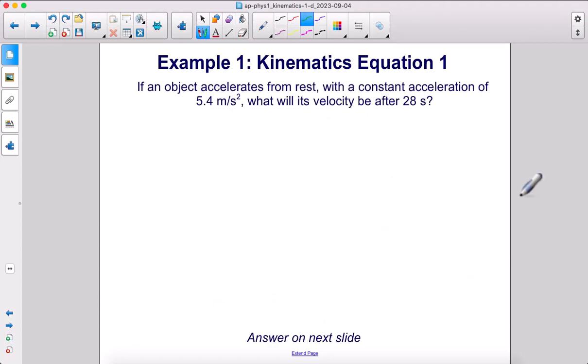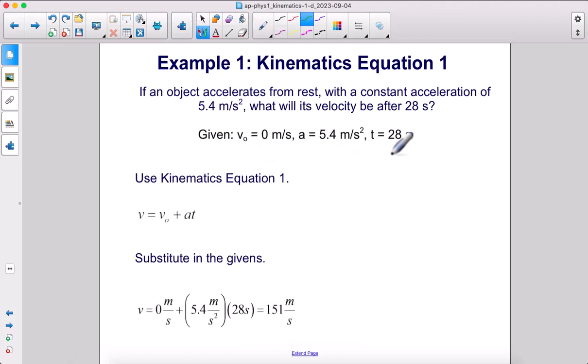If an object accelerates from rest with a constant acceleration of 5.4 meters per second squared, what will its velocity be after 28 seconds? We write out our givens. We have an initial velocity of zero—that's the secret given here because it accelerates from rest. When you see 'from rest,' that means the initial velocity is zero. We have an acceleration and a time. Initial time is zero.